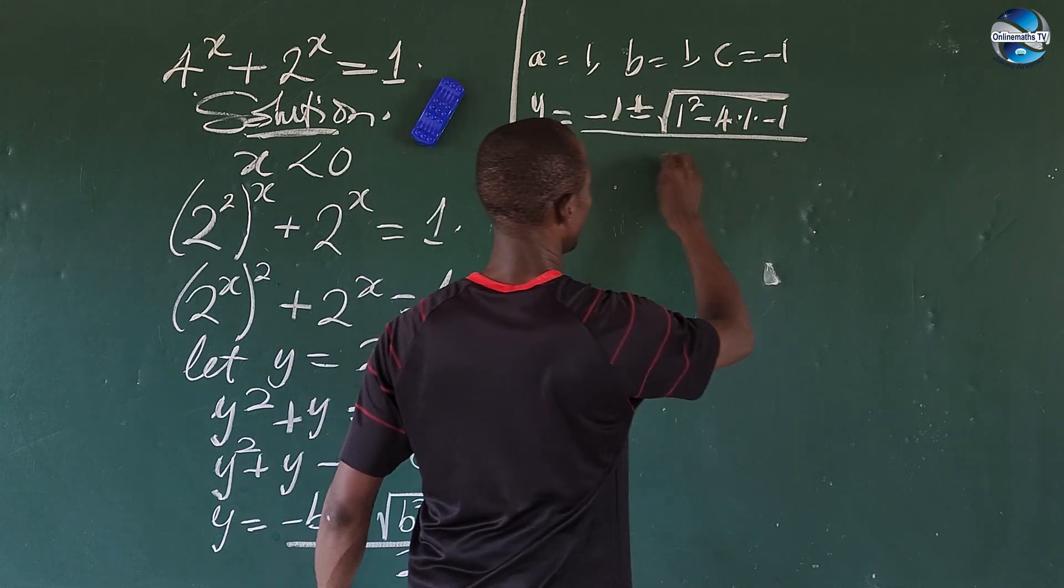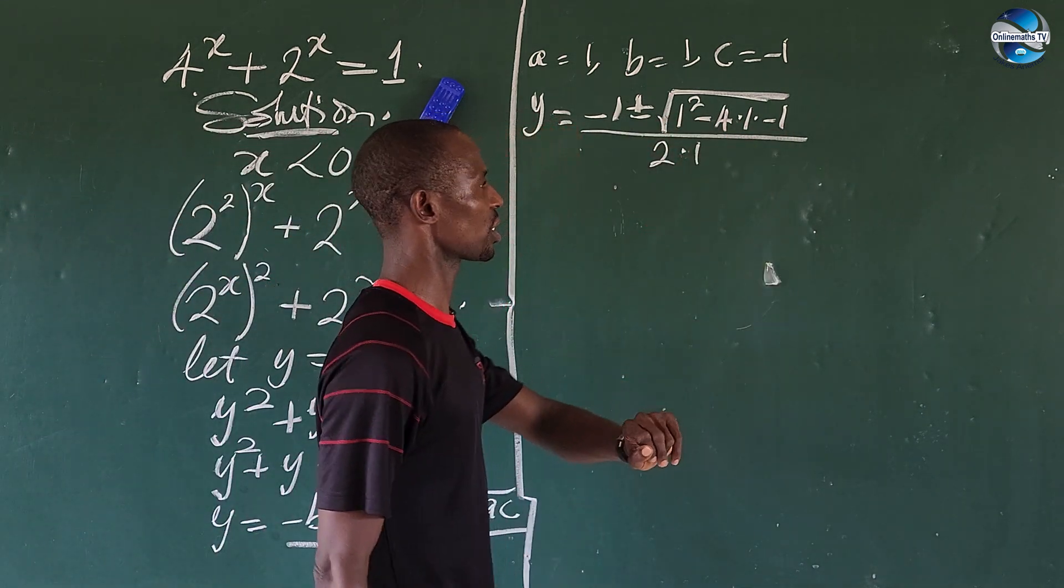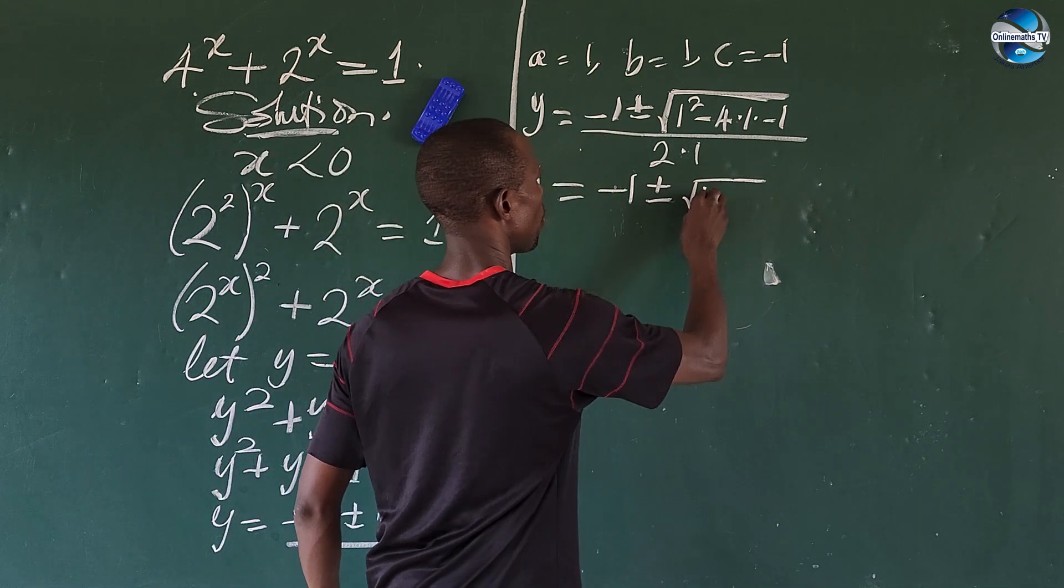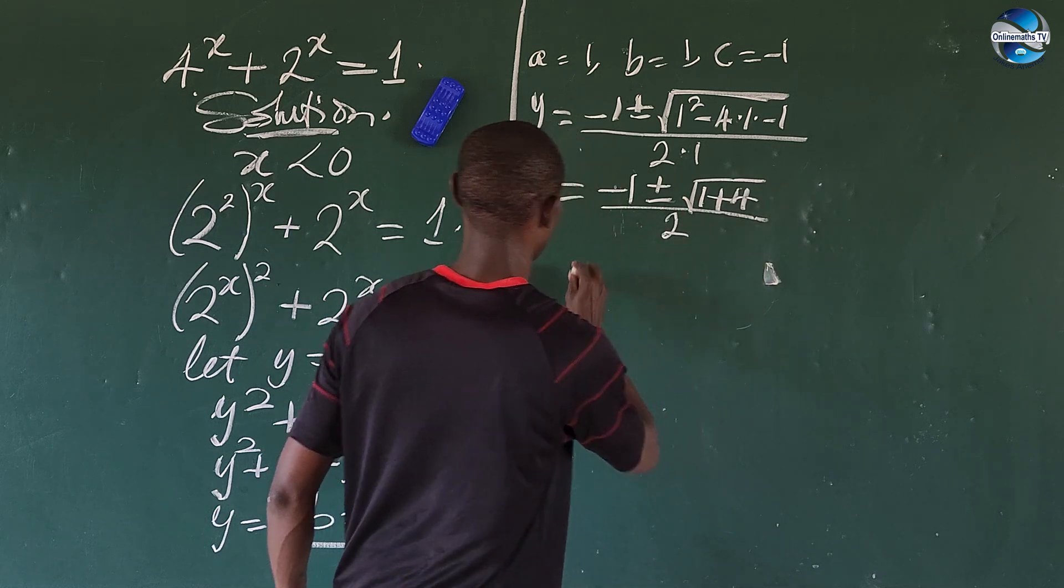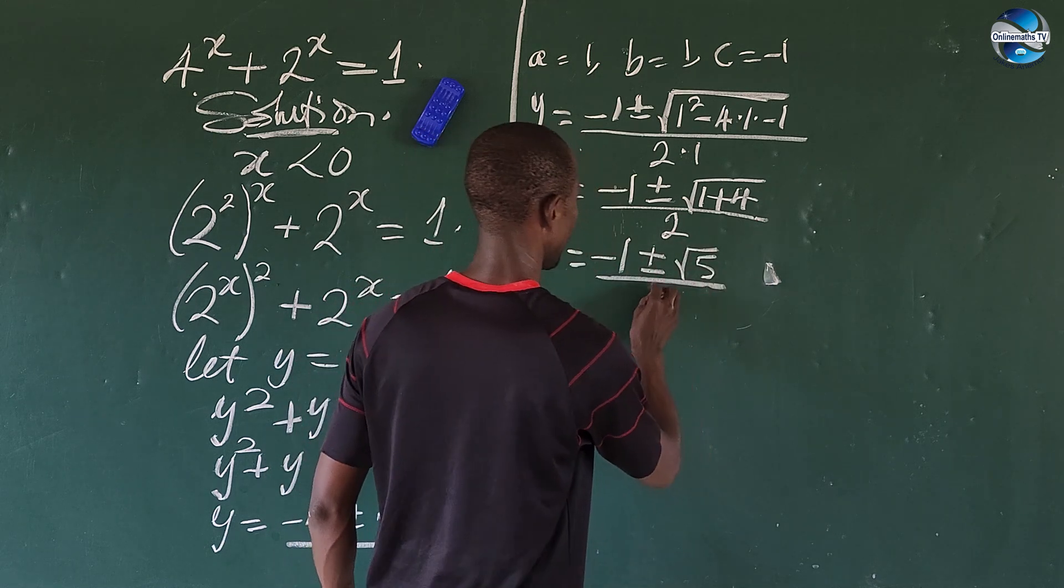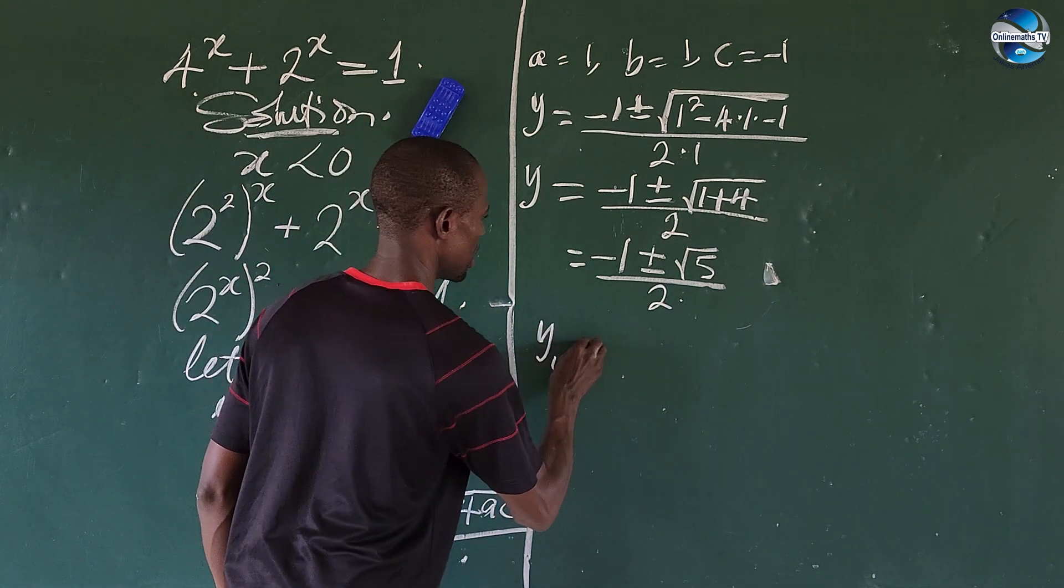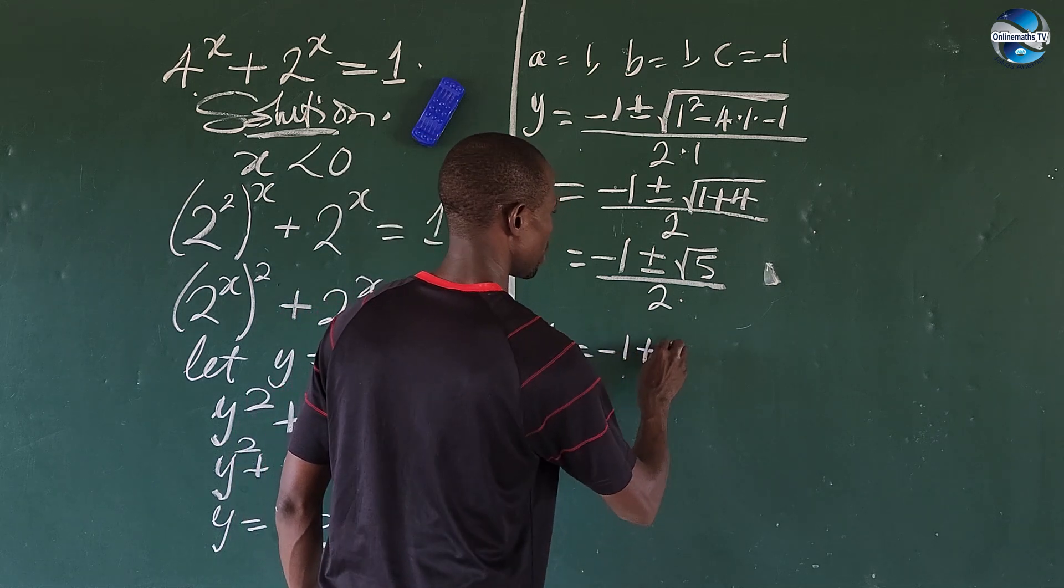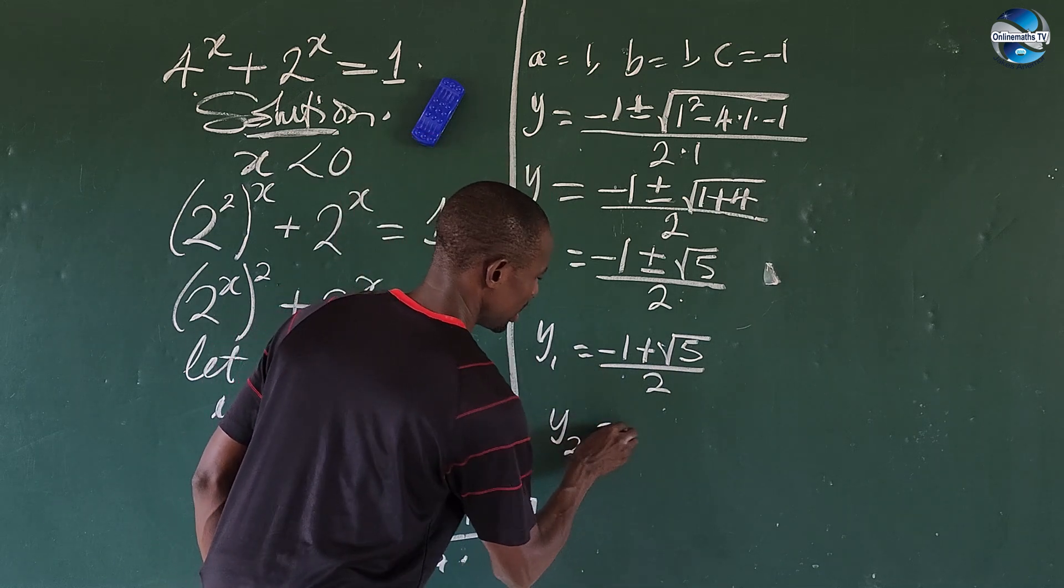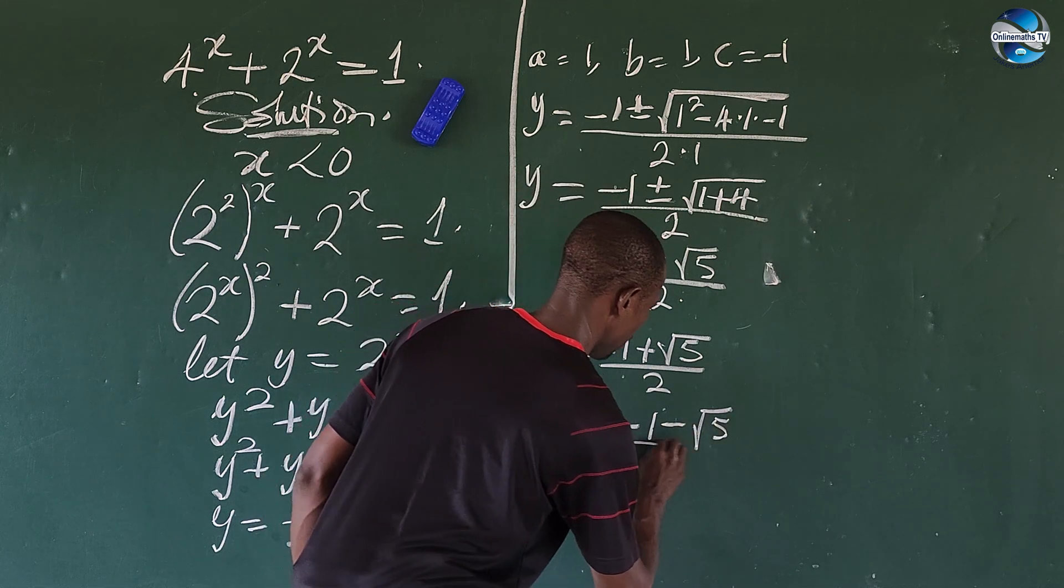This will give us minus 1 plus minus the square root of 1 plus 4 all over 2. So this we end up giving us minus 1 plus minus the square root of 5 all over 2. So we have two roots: y1 is equal to minus 1 plus the square root of 5 all over 2, and y2 is equal to minus 1 minus the square root of 5 all over 2.